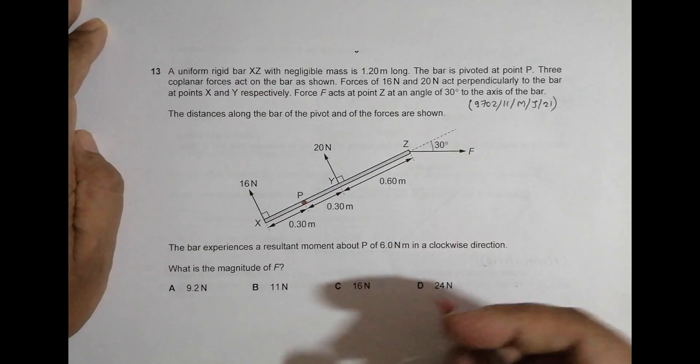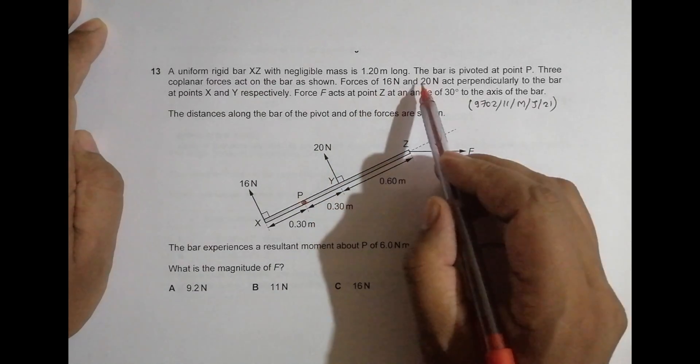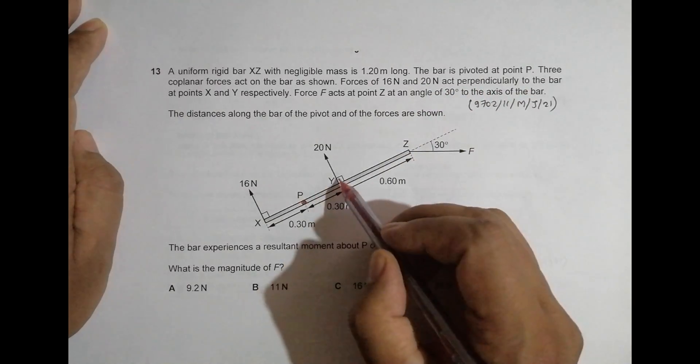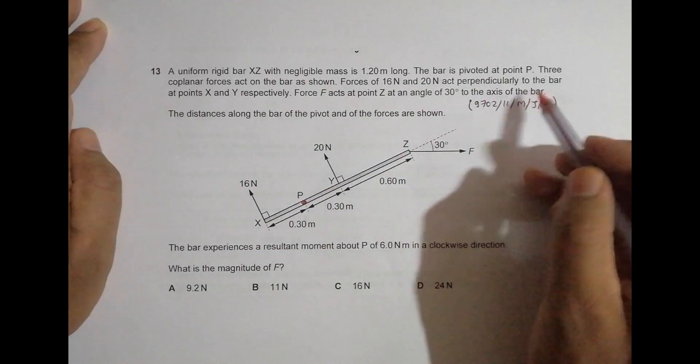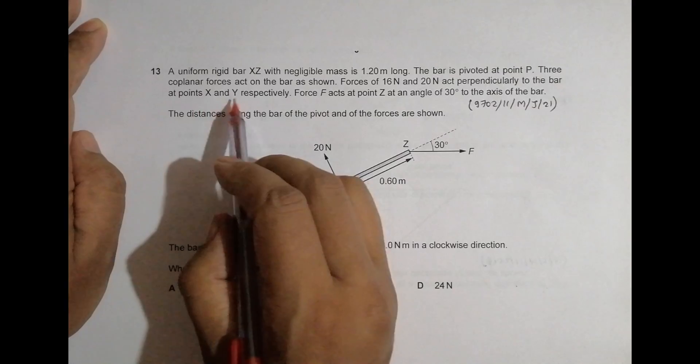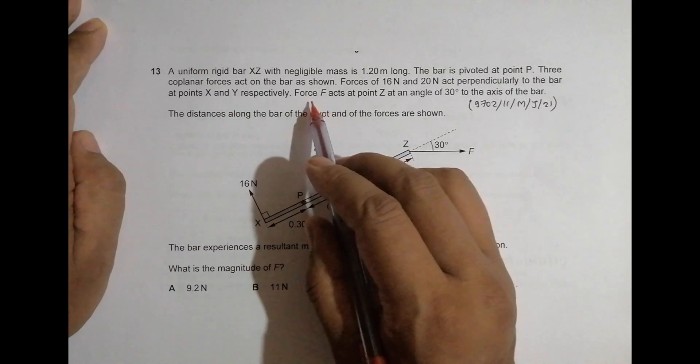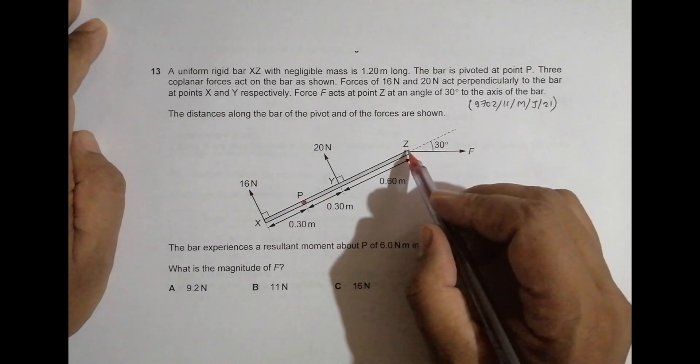Forces of 16 Newton and 20 act perpendicularly to the bar at points X and Y respectively. Force F acts at point J which is at the edge.